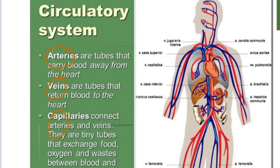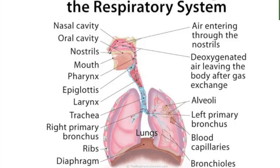What's the circulatory system? What are the parts of the circulatory system? What's the function of each of the parts? Or the respiratory system — what makes up the respiratory system? That includes things like the lungs and the diaphragm.